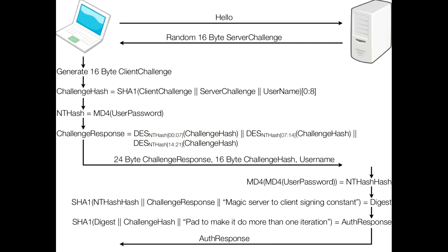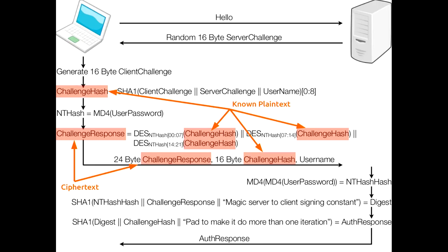As a quick overview of how MSChapv2 works: you get a random server challenge, the client generates a challenge, and that's hashed together to create your challenge hash. The important part is that you have this challenge hash — your known plaintext — which is actually sent across in the clear so both sides can verify the password. Then DES is used to encrypt this challenge hash with essentially the NT hash of the person's password, which is the password equivalent. That creates a challenge response, which is how you verify that the client has the correct password.